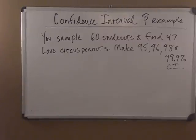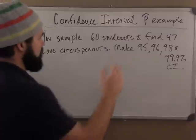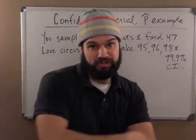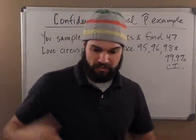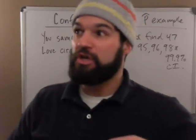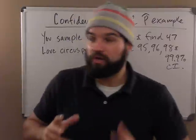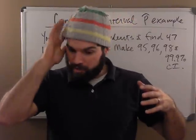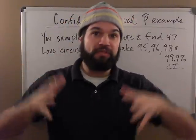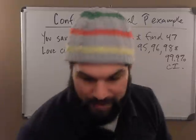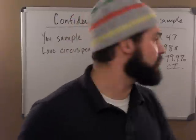Now I'm going to do an example of a confidence interval. I'm going to make a few different confidence intervals - a 95, a 96, a 98, and a 99.9% confidence interval. But they're all pretty much the same. The difference is, when we make a confidence interval, the more confident we want to be, the larger the net we need.